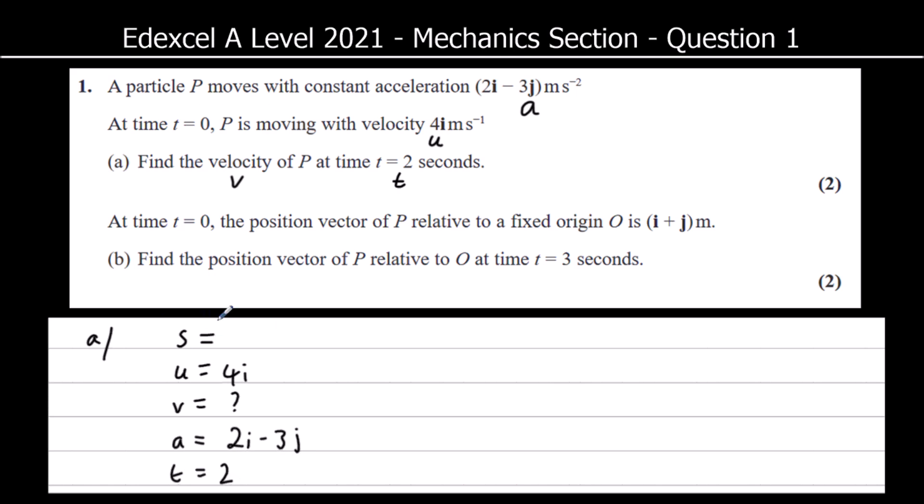So we're not using S. We're using the equation without S in. And that's V equals U plus AT. So V equals U plus AT. So V equals 4i plus 2 times 2i minus 3j.